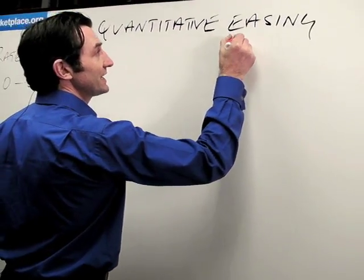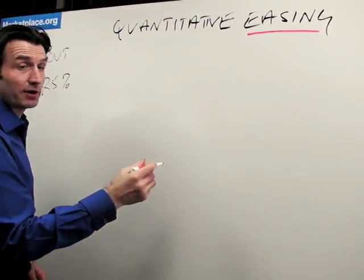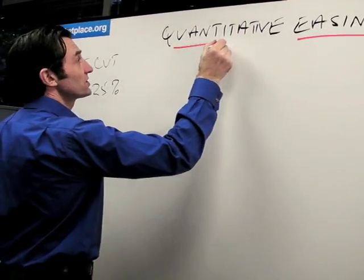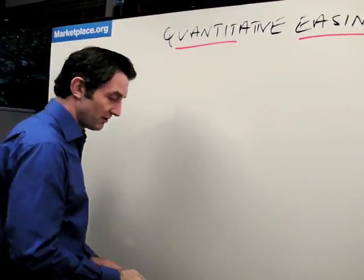So here we are. We have easing. We're trying to ease, take pressure off the markets by using quantity. Now, this is all about one thing,